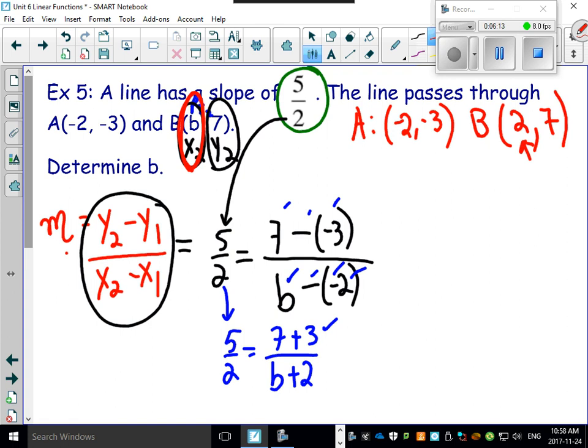We figured that one out. Let's figure out if the slope is right. Let's see if we can come up with this 5 over 2 value here. So again, make sure you label first: x1, y1, x2, y2. Here we go - y2 minus y1 over x2 minus x1. Let's see if this value is right - if it is, we should get this answer back.